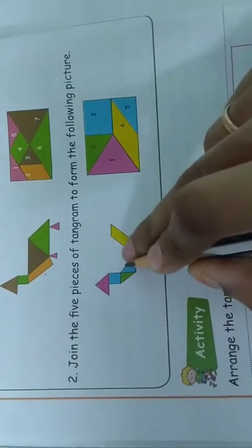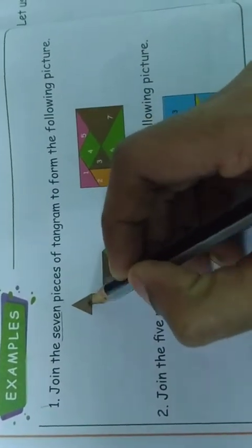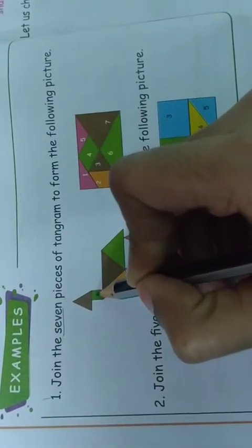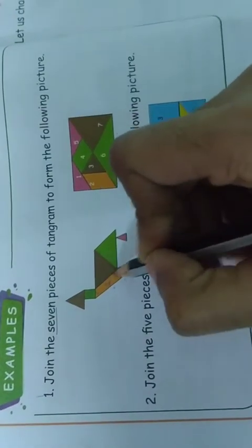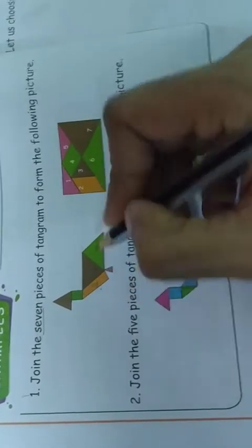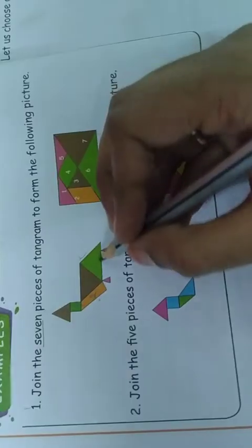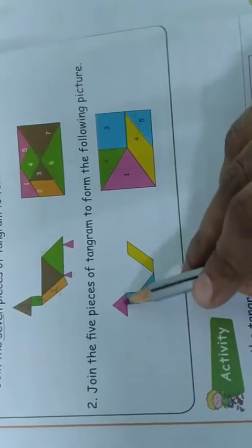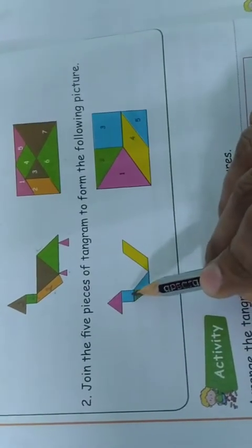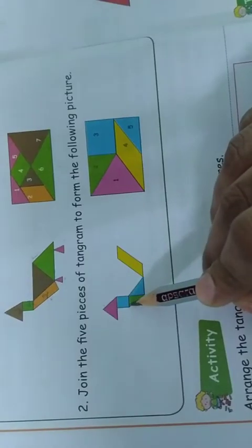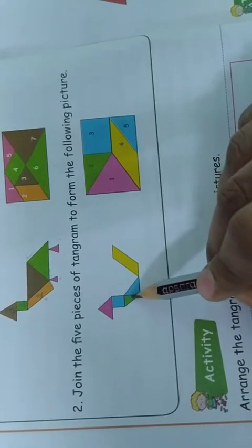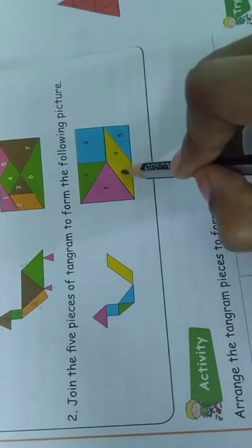Look at the first one. Piece 3, piece 4, piece 2 are here. The big triangle is piece 7, the green triangle is piece 6, and the two pink triangles are pieces 1 and 5. In the second picture with 5 pieces: the pink triangle is piece 1, the square is piece 3, the green triangle is piece 2, the blue triangle is piece 5, and the parallelogram is piece 4.